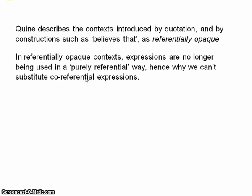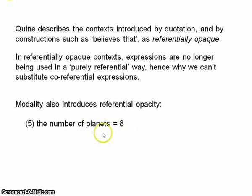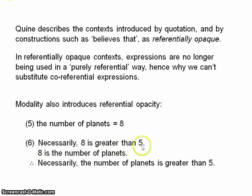Now it turns out that modal operators also introduce opaque contexts. Here is a classic example. The number of planets is 8; 8 is equal to the number of planets. Consider this argument: necessarily 8 is greater than 5; 8 is the number of planets; therefore, necessarily the number of planets is greater than 5. The conclusion to this argument is obviously false, and this very clearly demonstrates the opacity introduced by modal operators. In this context, what does 'the number of planets' refer to? What does '8' refer to? In the case of quotation and belief, we found ways to explain the problem — can similar explanations be offered here? It depends very much on how we interpret the modal operator in question.